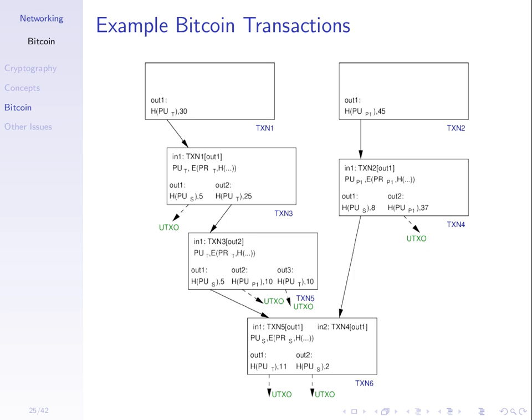One of the problems is what's called double spending. If we go through these transactions, I received 2 plus 5 — I have 7 Bitcoin. If I was to cheat, I would create one transaction that sends 7 Bitcoin to one person to pay them, and another transaction that sends 7 Bitcoin to someone else. I've only got 7 but I spend it twice — that's double spending.